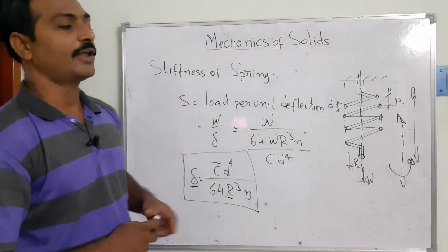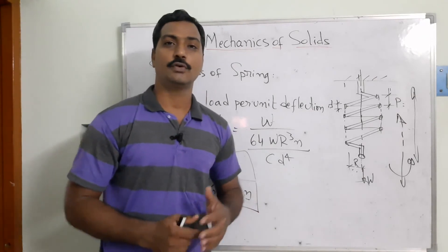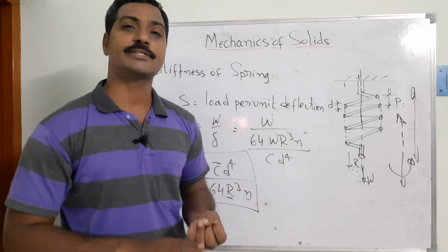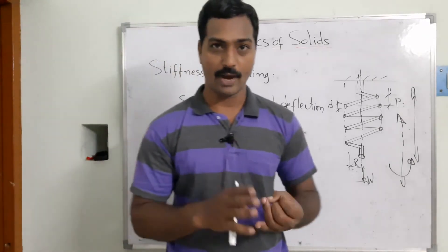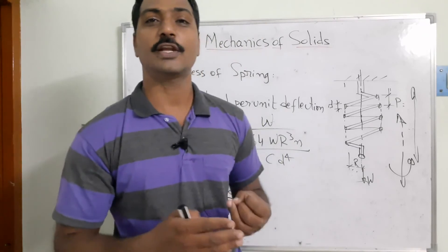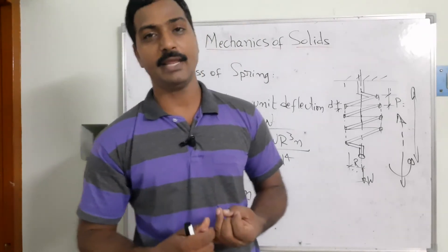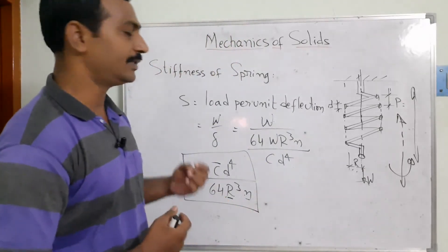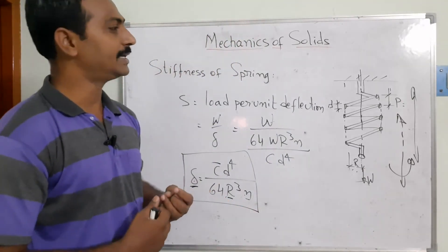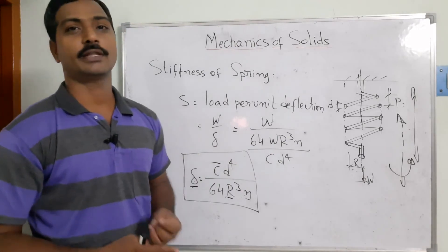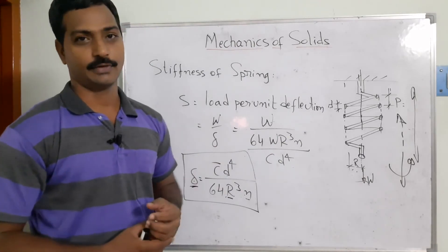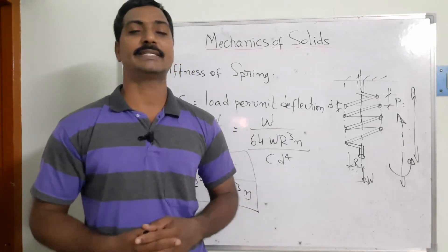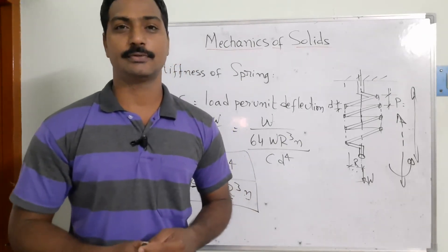I hope you are able to understand today's topic. We have identified: the maximum shear stress acting on a wire, the deflection of the spring mathematically, and the stiffness of the spring. These three parameters are widely used in the design of spring components. If you feel any difficulty or confusion, please put it in the comment section so that I can reach out to you. Thank you.